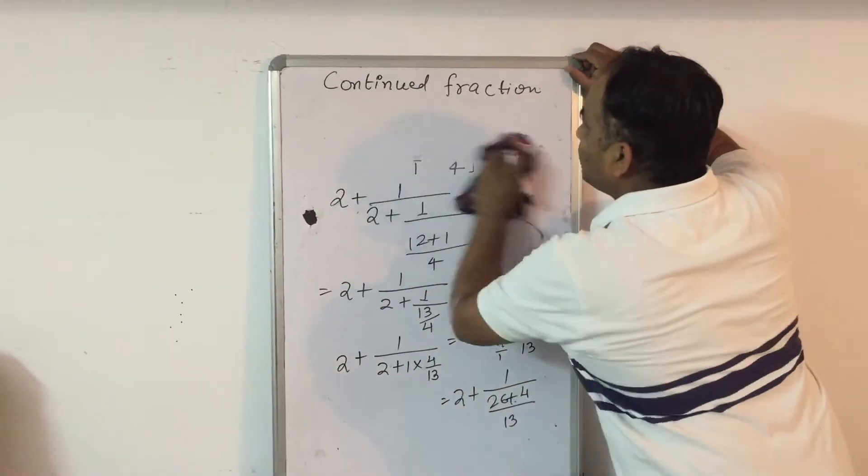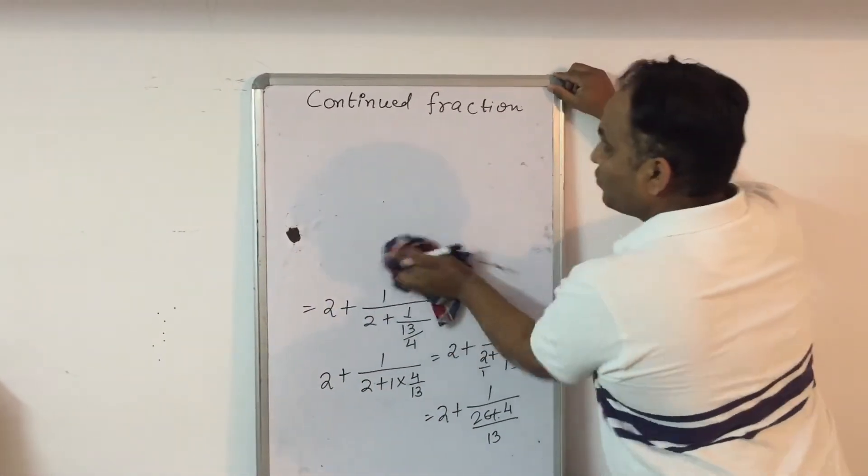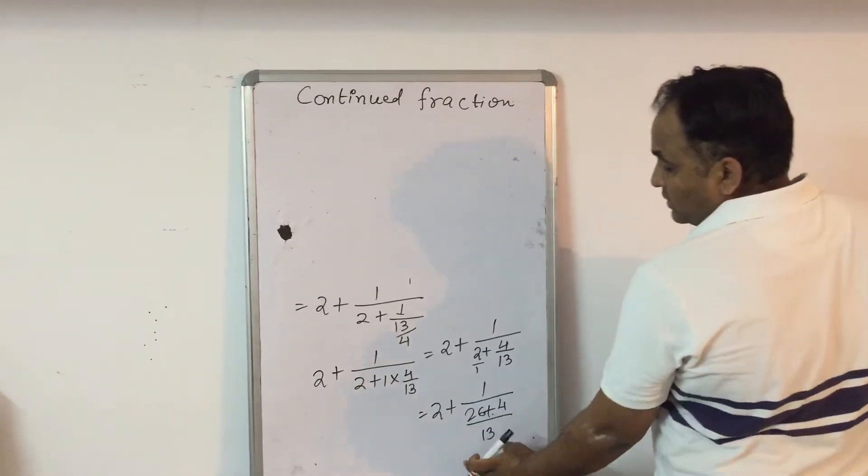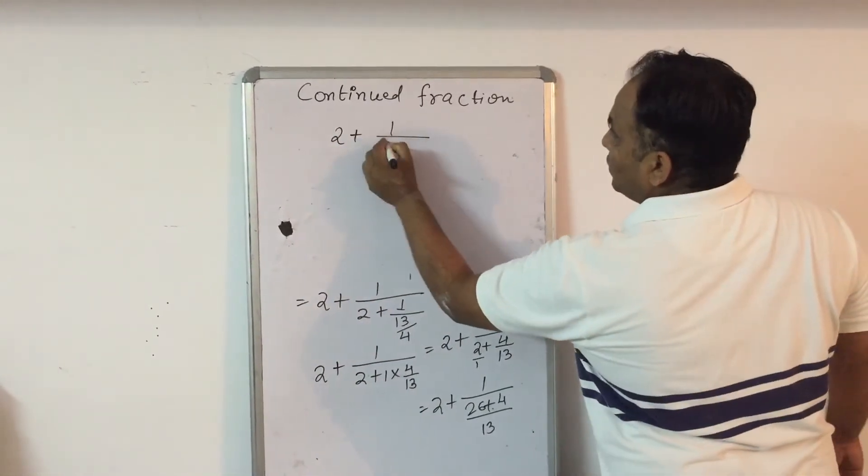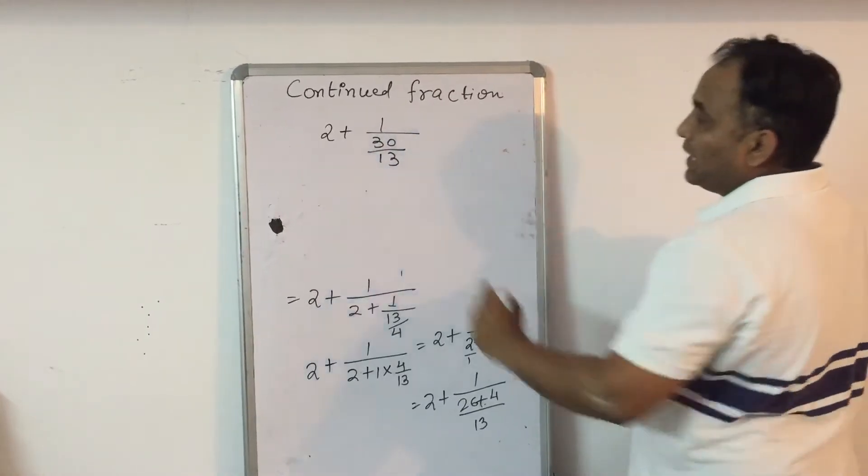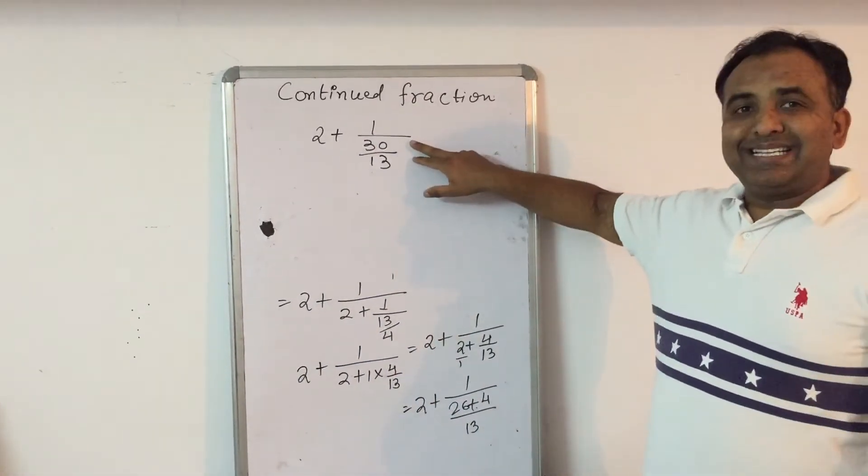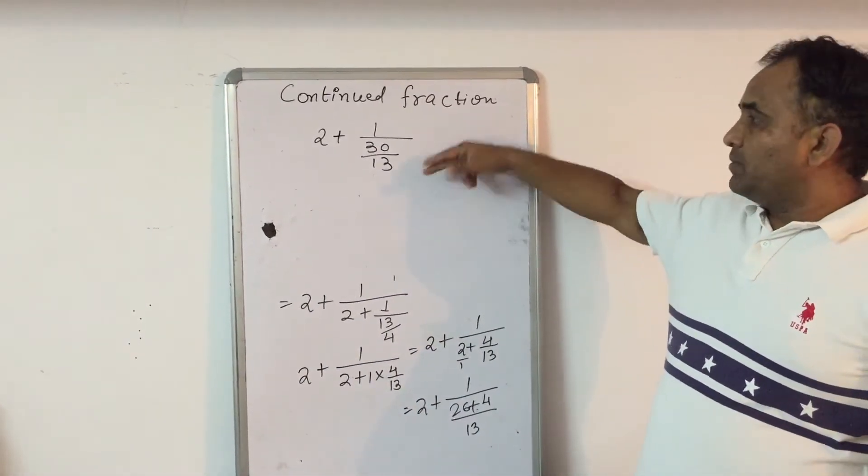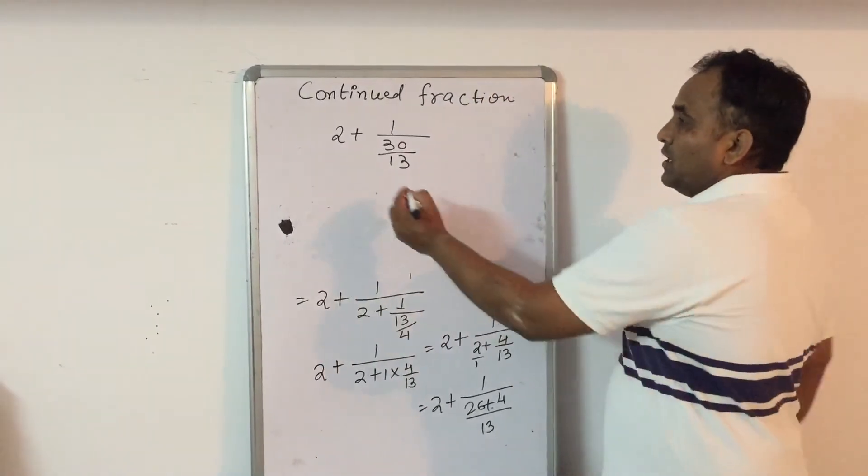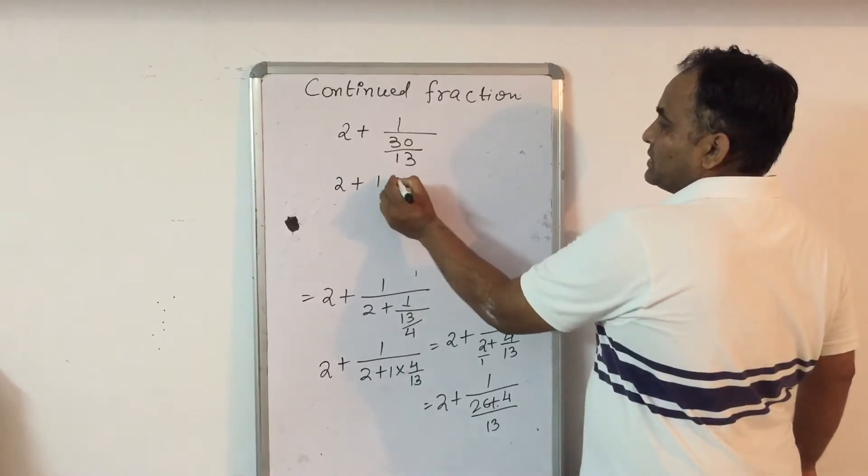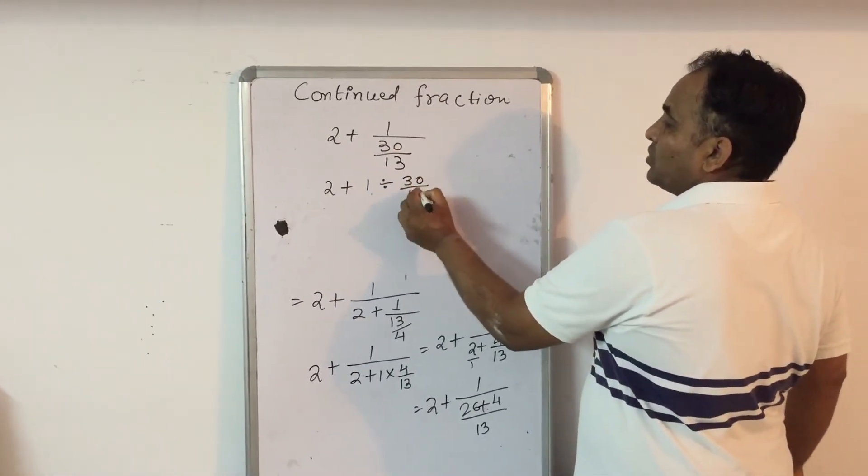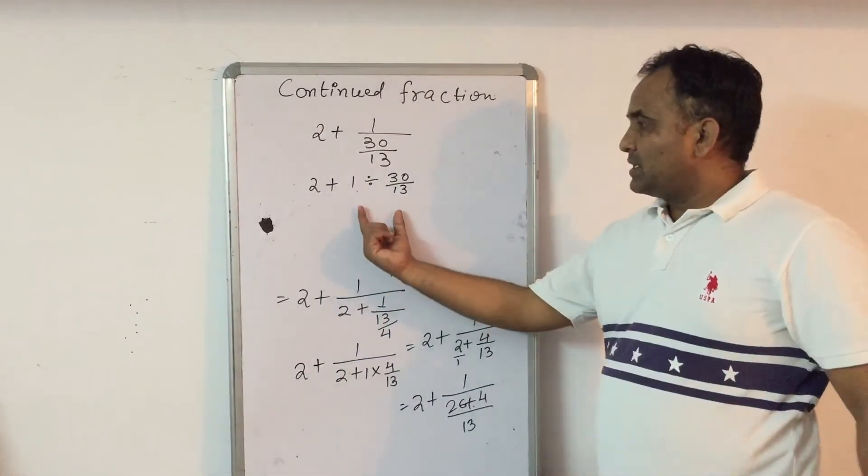So I will use the bracket. I am taking the term from here: 2 plus 1 upon 30 upon 13. Again, this 30 upon 13 is itself in a division. So it will be transposed. You can see, 30 upon 13 is in division with 1, so you can represent it this way.